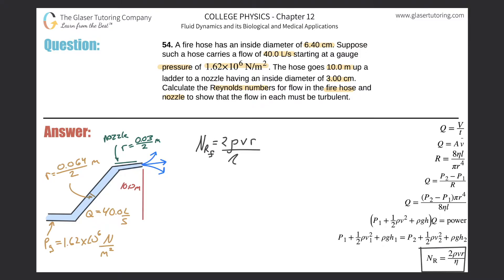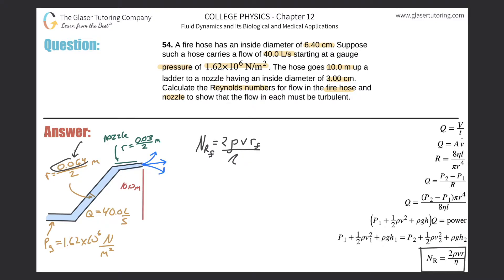For the fire hose, I need to know the density of the fluid — that's water — the velocity of the flow, and the radius of the fire hose. They gave us the diameter, so I took the diameter, converted it into meters, and divided by two to get the radius. We also need the viscosity of water, which we know. The only unknown is the velocity of the water in the fire hose — so how do we find that?